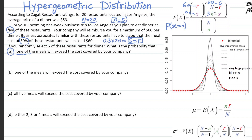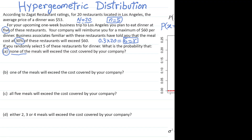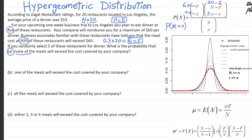So the numerator is 6 choose 0 times 14 choose 5 — that is, select none of the expensive restaurants and choose five out of the 14 inexpensive ones — divided by the unconditional denominator, 20 choose 5.